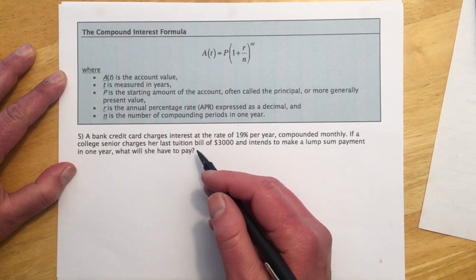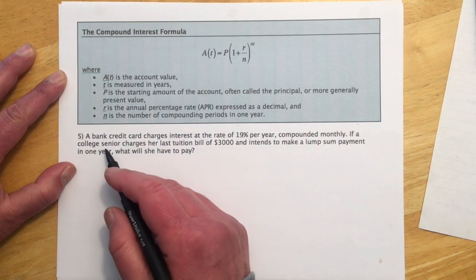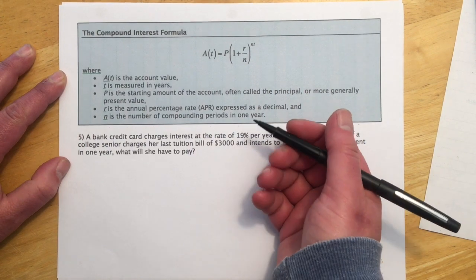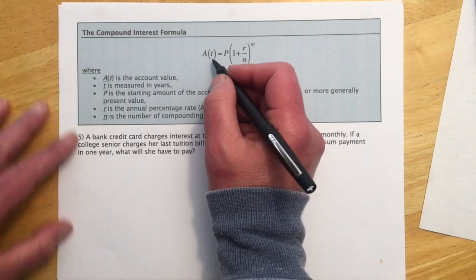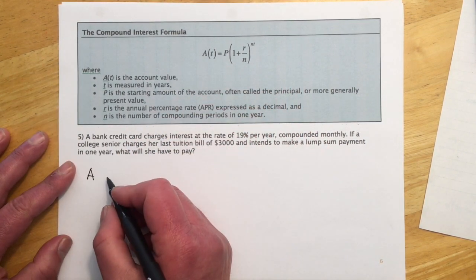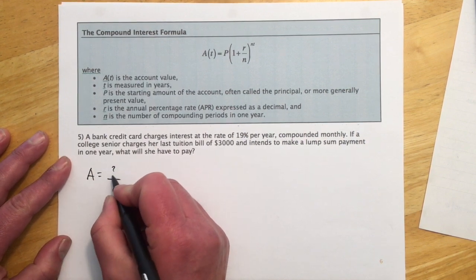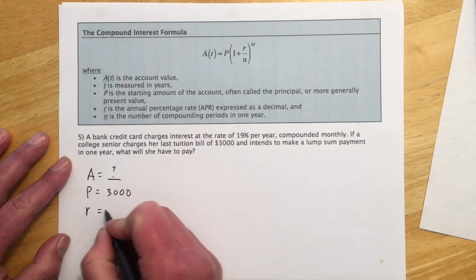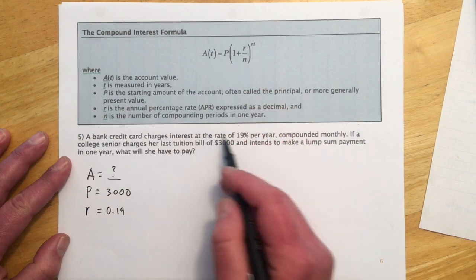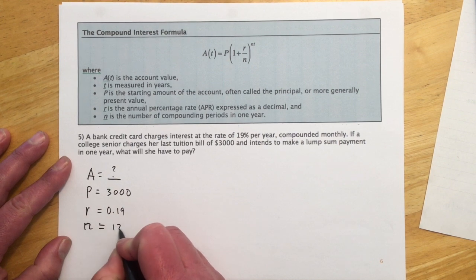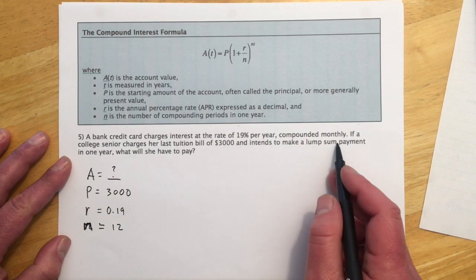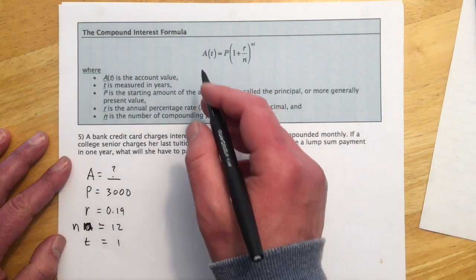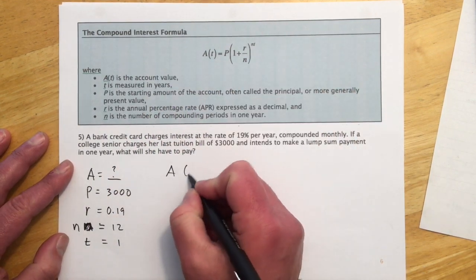So this first thing goes, a bank credit card charges an interest rate of 19% per year compounded monthly. If a college senior charges her last tuition bill of $3,000 and intends to make a lump sum payment in one year, what will she have to pay? Okay, so the amount is what we're trying to figure out, how much she has to pay. And so let me go ahead and make the list. So the amount is the question mark. The principal is going to be our $3,000. The rate is 19%. Ouch. N, it was compounded monthly, so N is 12. And it is going to sit there for one year, so T is 1.